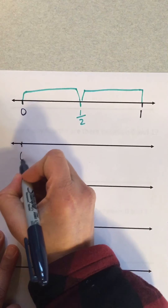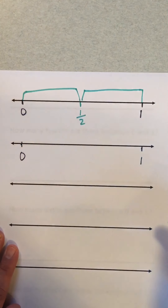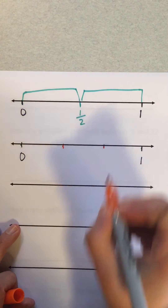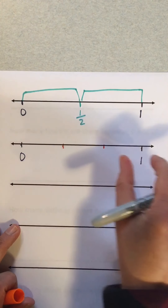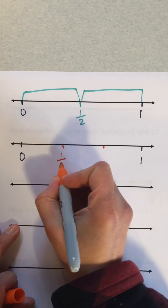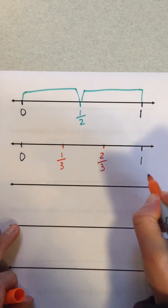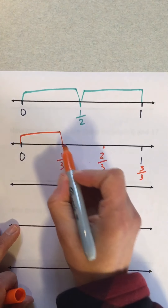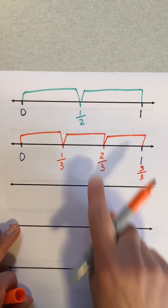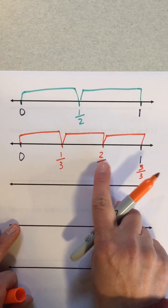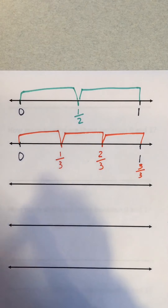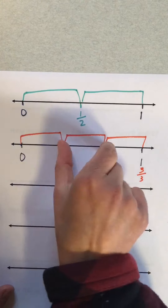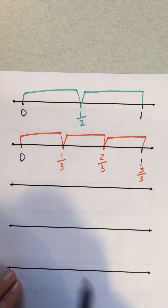This is zero, this is one — the number line. What are these? One, two, three — they're thirds. One third, two thirds, three thirds. How many parts are there? One, two, three. Remember part and whole — this is the whole number.